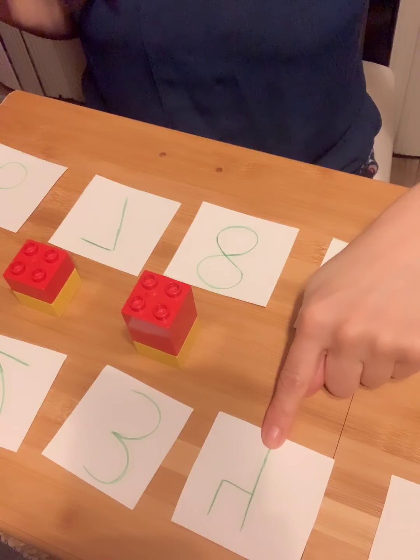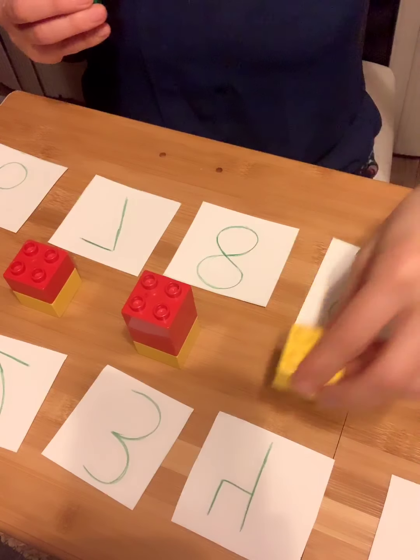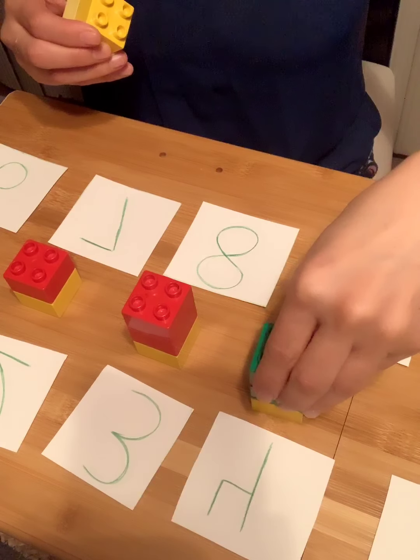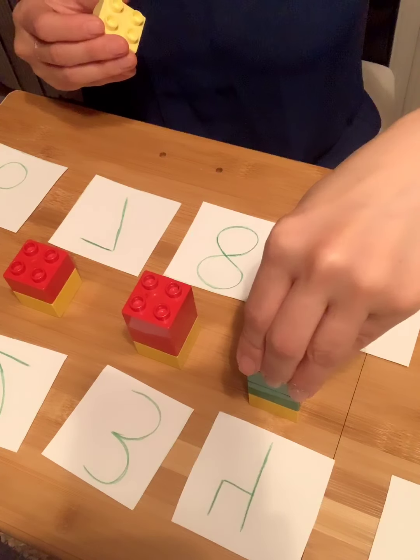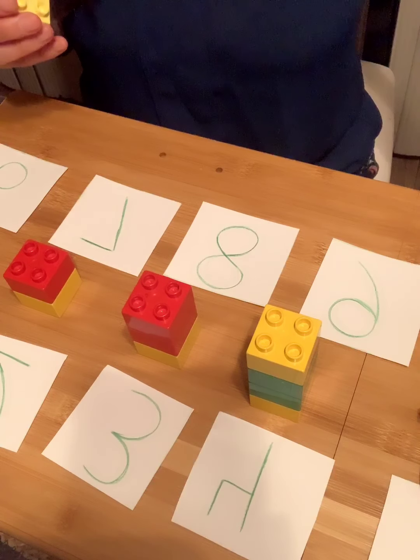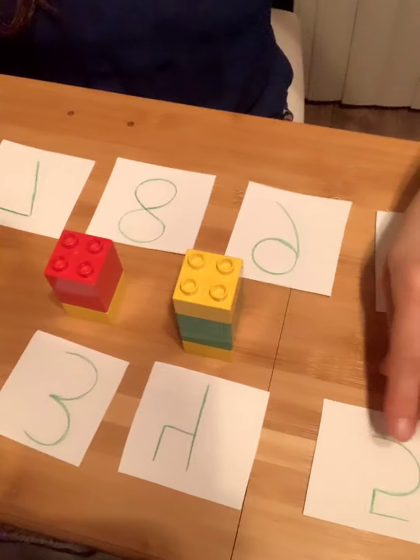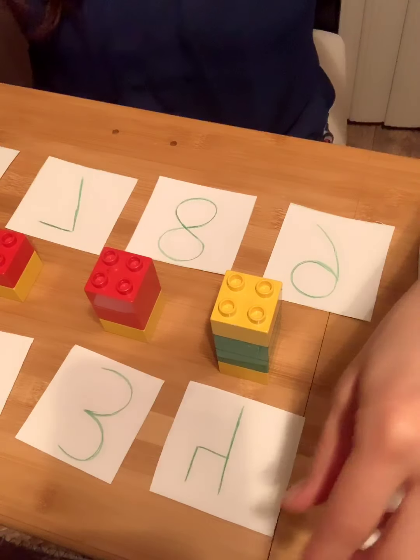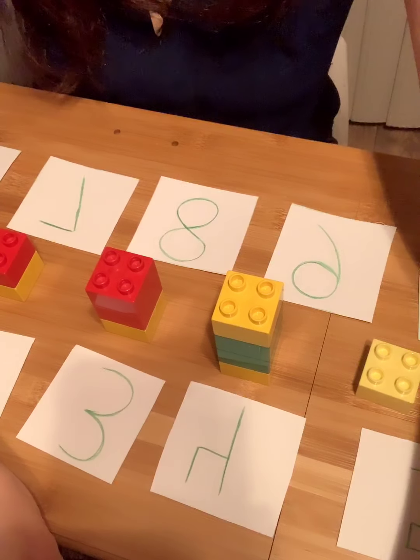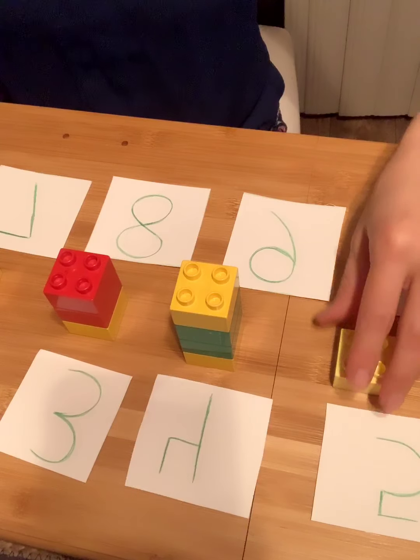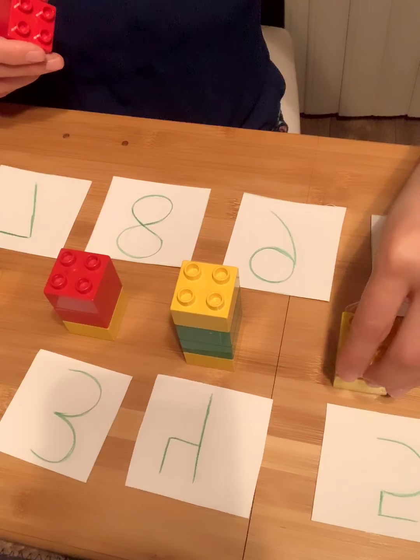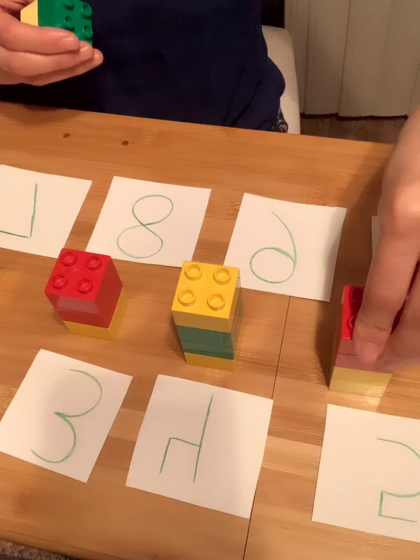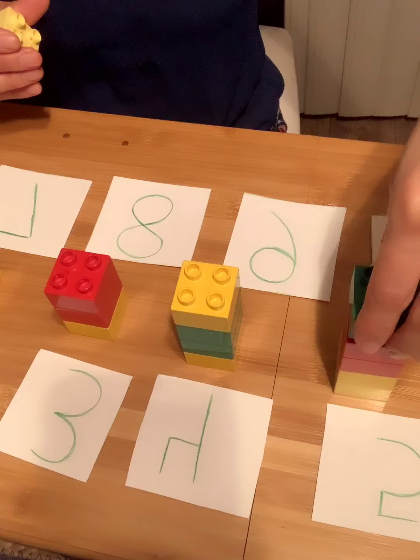Now I have number four and I need to put four Legos: one, two, three, four. Here I have number five and I need to put five Legos: one, two, three, four, five.